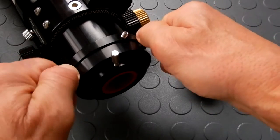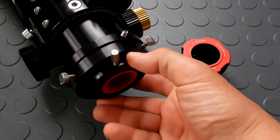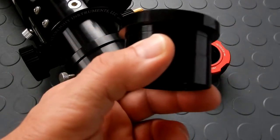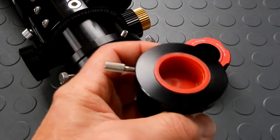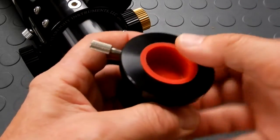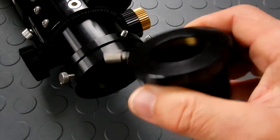So this is what your typical adapter would look like - inch and a quarter to two inch, something on the order like this. And obviously your inch and a quarter eyepieces would go in here.